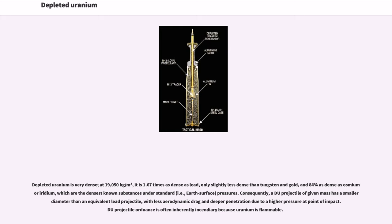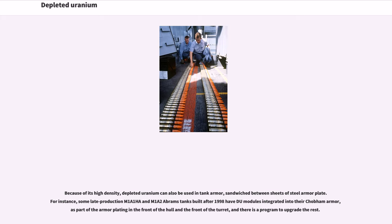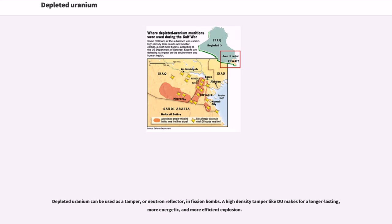DU projectile ordnance is often inherently incendiary because uranium is flammable. Because of its high density, depleted uranium can also be used in tank armor, sandwiched between sheets of steel armor plate. Some late-production M1A1 and M1A2 Abrams tanks built after 1998 have DU modules integrated into their Chobham armor, as part of the armor plating in the front of the hull and the front of the turret. Depleted uranium can also be used as a tamper, or neutron reflector, in fission bombs, making for a longer-lasting, more energetic, and more efficient explosion.